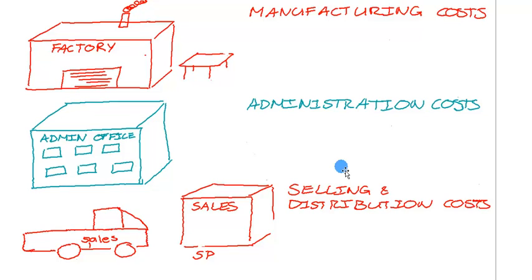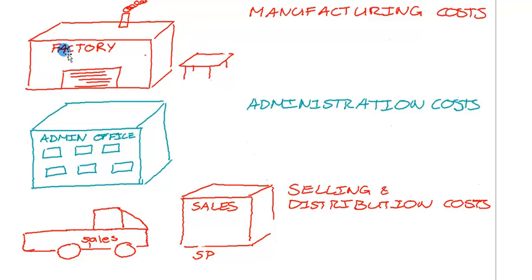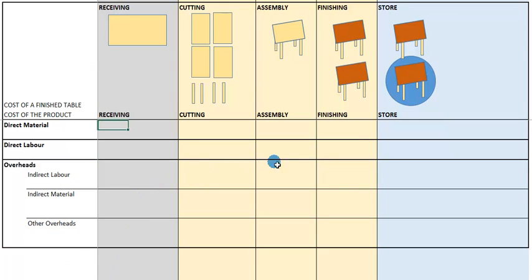In a previous video we saw that we can basically group our costs for a manufacturing entity into three broad categories: manufacturing cost, admin, and selling and distribution costs. What we're going to do now is zoom in a little bit on the factory and see what costs we can find there and how we group or classify those costs.